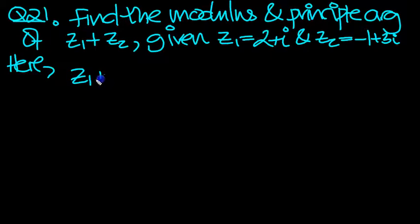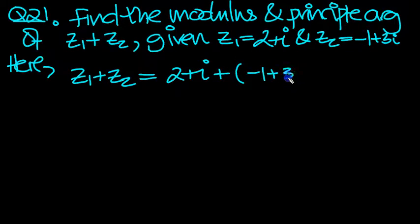So here, let's just work out z1 plus z2. I'm going to write it out long-windedly first of all. So it's 2 plus i plus the next number is minus 1 plus 3i.